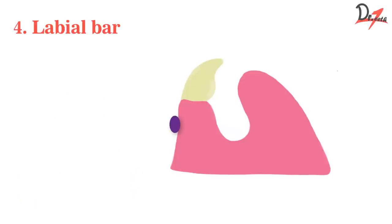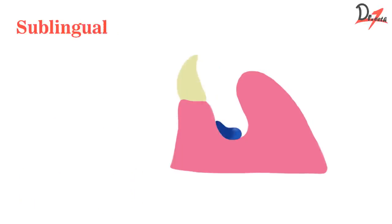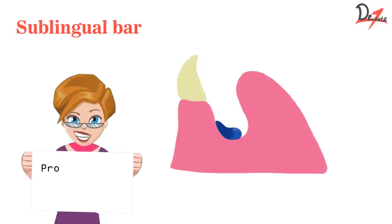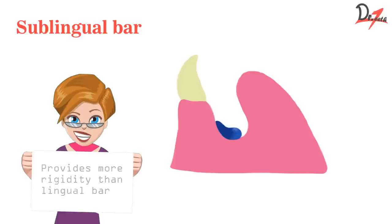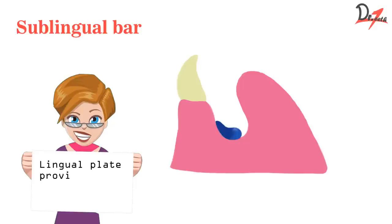We also have one more major connector: the sublingual bar. When we place the lingual bar, below that will be the sublingual bar, and it is given because it has increased rigidity. Also keep in mind that the lingual plate has the best rigidity.